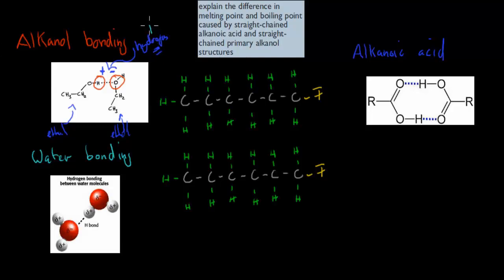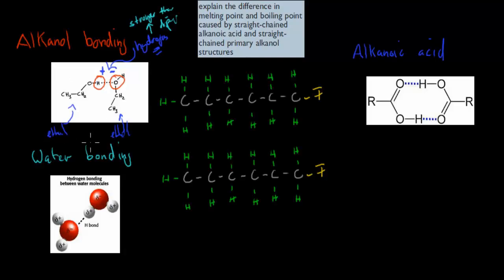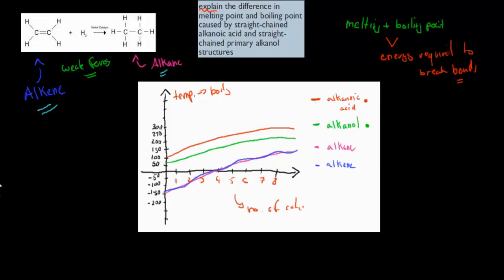Hydrogen bonds are still relatively weak — not as strong as covalent or ionic bonds — but they're stronger than dispersion forces. Alkanes and alkenes only have dispersion forces, whereas alkanols have those dispersion forces plus hydrogen bonds, which are quite a bit stronger. This explains why the melting and boiling point for alkanols is higher than for alkanes or alkenes.